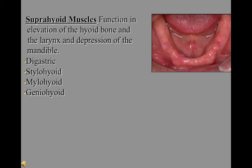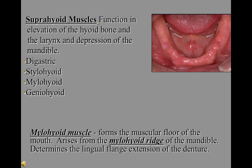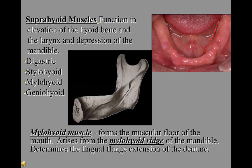The suprahyoid muscles function in elevation of the hyoid bone and larynx and depression of the mandible. They are the digastric, stylohyoid, mylohyoid, and geniohyoid. The mylohyoid muscle arises from the ridge on the mandible and determines the lingual extent of the mandibular denture. Note how this line gets closer to the ridge as resorption takes place.